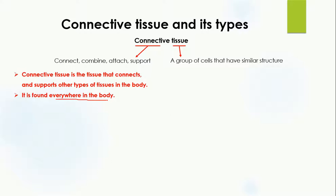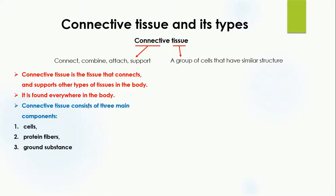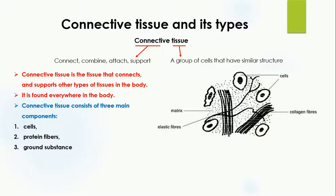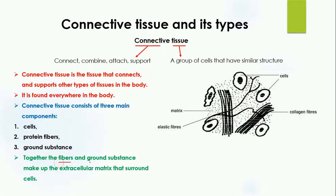Connective tissue is found everywhere in the body, which is why all the tissues inside the body are held together, forming and giving a particular shape to the human body. Connective tissue is made up of three main components: cells, protein fibers, and ground substance. In this diagram you can see the cells and the protein fibers — elastic fiber or collagen fiber. The part labeled as matrix is the ground substance. Fiber and ground substance combine together to form the extracellular matrix that surrounds the cell.